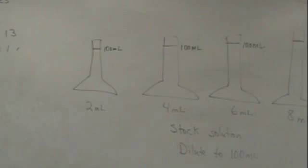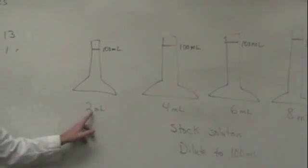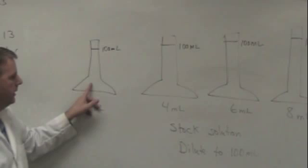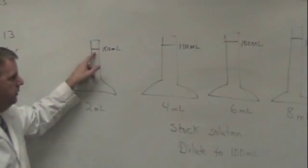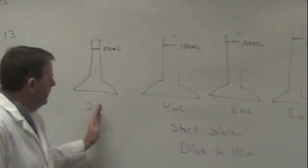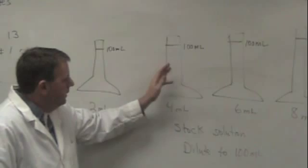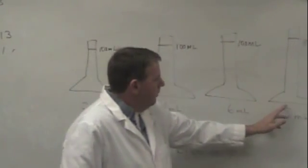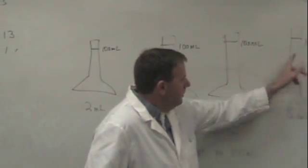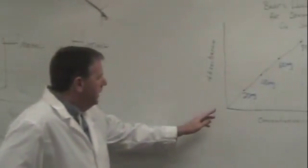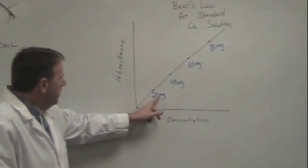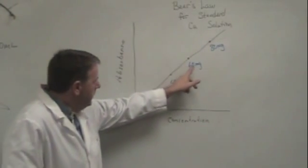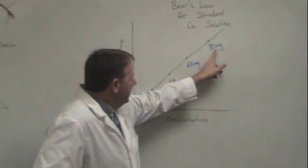To make our known solutions, we want to add 2 milliliters of the stock solution, which is this blue stuff right here. We want to put it into a 100 milliliter volumetric flask and dilute to the 100 milliliter mark. If we do that with the 2, then the next bottle we'll do 4 milliliters to 100 milliliters. In the third bottle we'll do 6 milliliters of the stock solution to 100 milliliters. In the fourth flask we'll do 8 milliliters and dilute to 100 milliliters. If we do that, we will end up getting our known solutions where we would have 20 milligrams of copper per 100 milliliters of solution, 40 milligrams of copper per 100 milliliters, 60 milligrams of copper per 100, and 80 milligrams per 100.